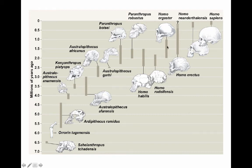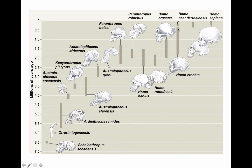A number of hominin species overlapped — living at the same time. Paranthropus boisei lived at the same time as Homo ergaster and the Neanderthals, overlapping also with Paranthropus robustus and Homo habilis. This means each species didn't simply give rise to the next one — it's a big branching tree, with different groups existing, some going extinct, and others giving rise to different species. We don't completely understand the branching.